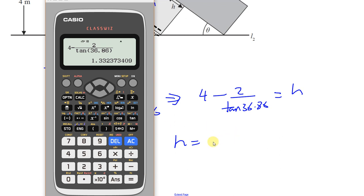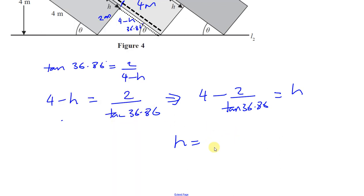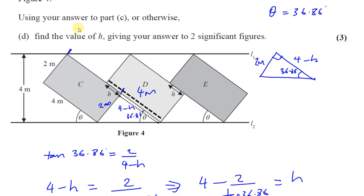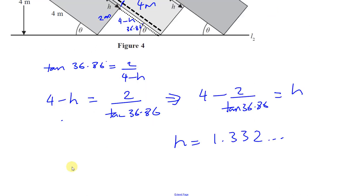It says two significant figures. That's the third, that's the second. So it's 1.3. So H is equal to 1.3 meters. And there's our answer.